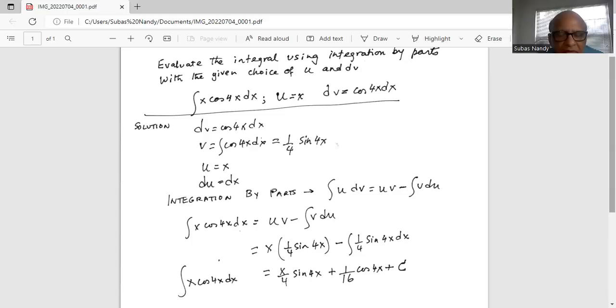So that is equal to x over 4 cosine 4x from the first term and integration of one-fourth sine 4x is minus one-fourth sine 4x is plus 1 over 16.